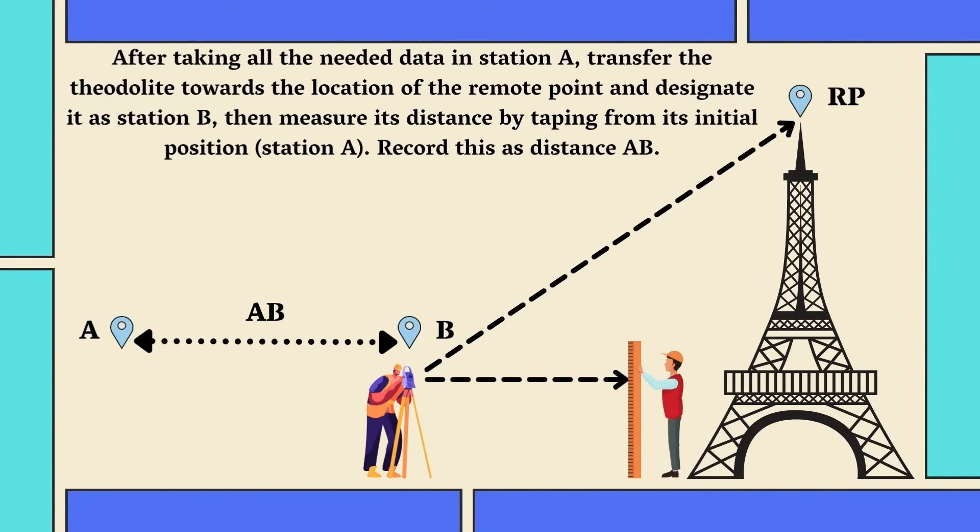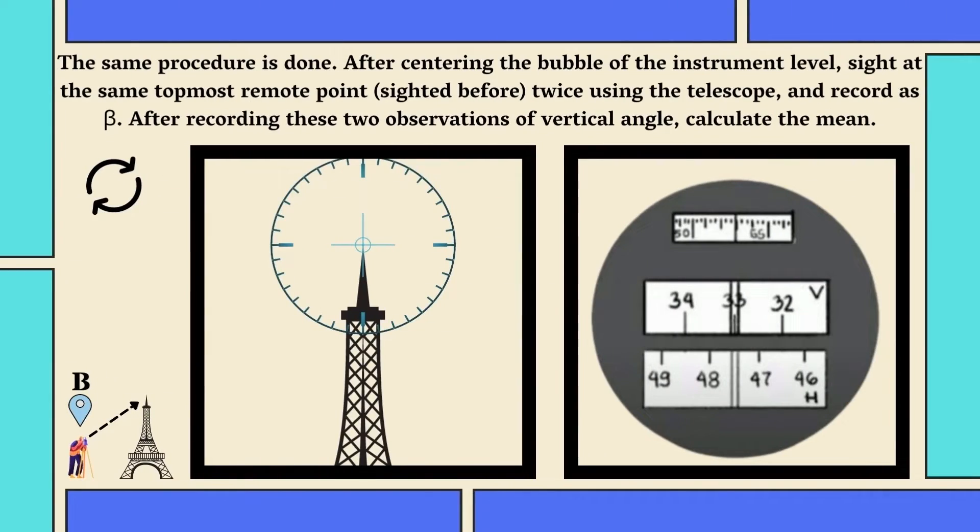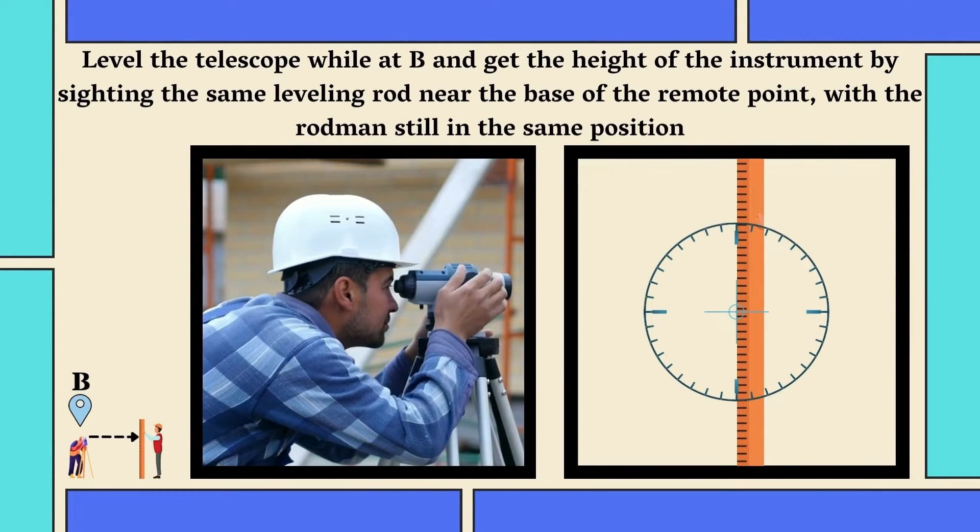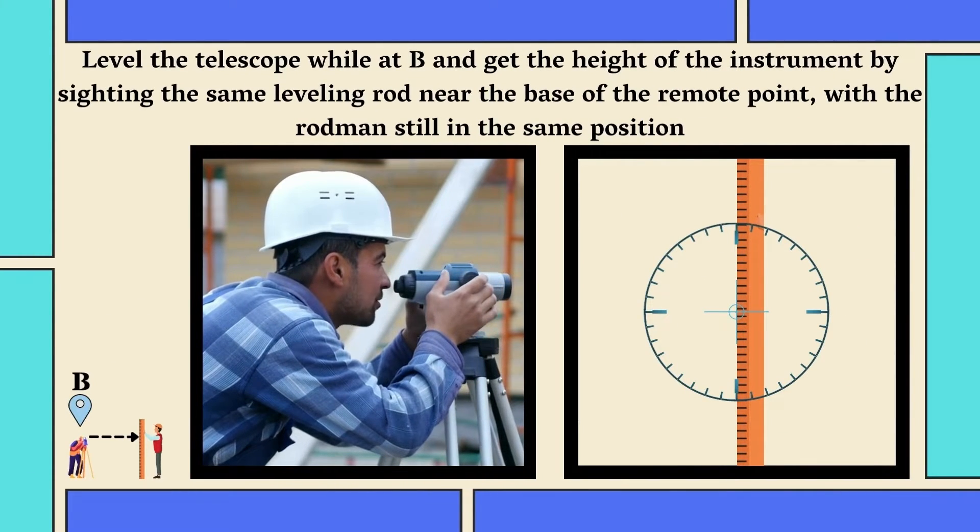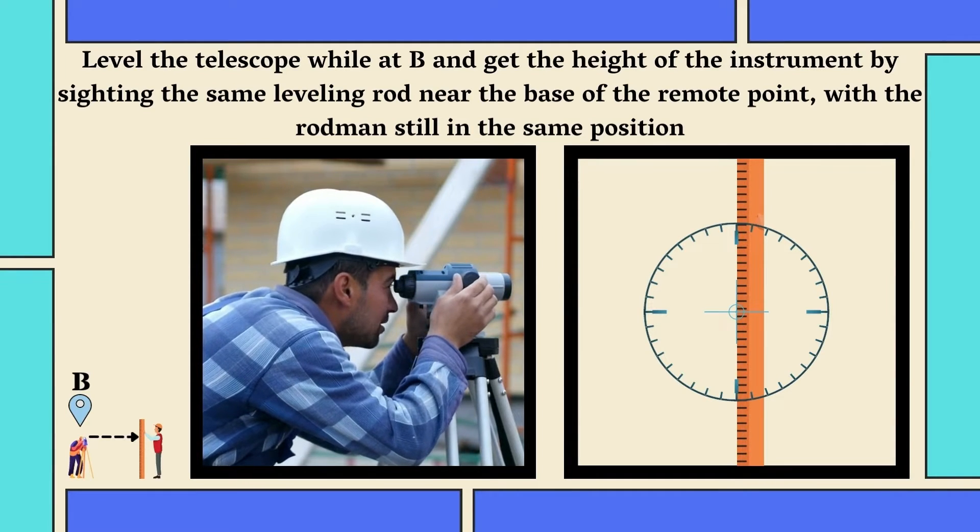After taking all the needed data in station A, transfer the theodolite towards the location of the remote point and designate it as station B. Then, measure its distance by taping it from its initial position. Record this as distance AB. From here, do the same procedure done on station A. After centering the bubble of the instrument level, sight at the same topmost remote point twice using the telescope and record as beta. After recording these two observations of vertical angle, calculate the mean. Level the telescope while at B and get the height of the instrument by sighting the same leveling rod near the base of the remote point, with the rodman still in the same position.